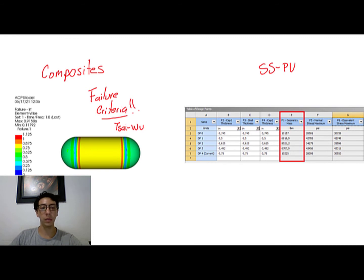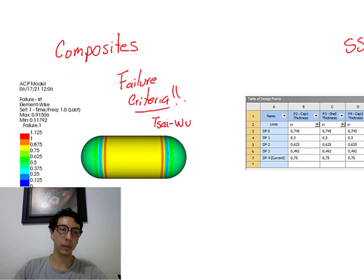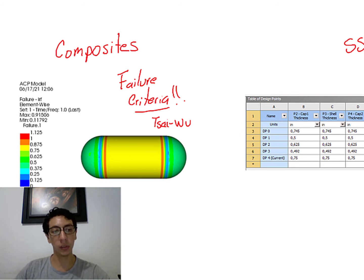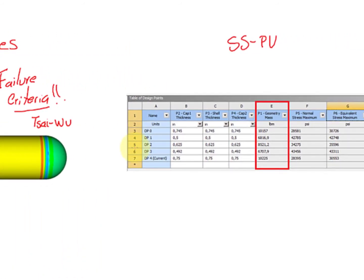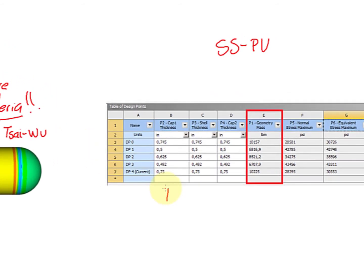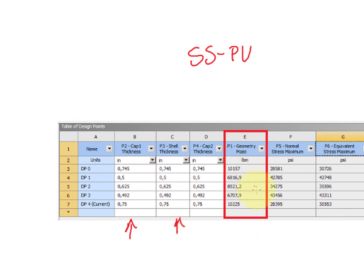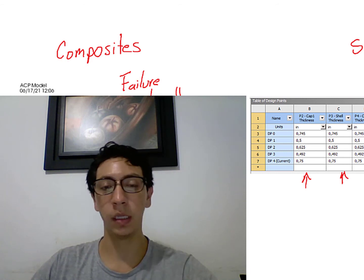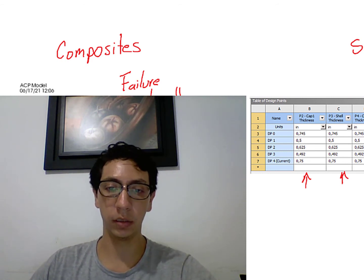Finally, I want to show you the Tsai-Wu failure criteria, which is used for composites. This failure criteria means: if you reach one, then your composite fails. In this case, we have a maximum value of 0.91, so it means we are okay. On the right side, we have a table for the stainless steel pressure vessel, where we have different thicknesses for the cap and the shell, and the total weight of the pressure vessel. We have the maximum stress values for bending, and those values are compared against the allowable maximum stress. That's all I wanted to show you — some benefits of using composites and some benefits of using FEA in the design of pressure vessels.